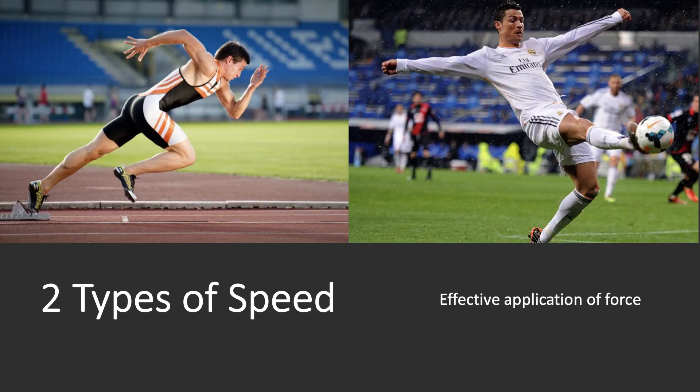Let's begin by talking about the two types of speed. Firstly, there's high speed linear locomotion, which is the typical 50 to 100 meter sprints in a linear pattern. The second type is multi-directional locomotion, very common in team-based sports where you're changing direction and generating a high velocity. Ultimately, the effective application of force limits speed, change of direction, and agility — and this is known as the strength capacity.